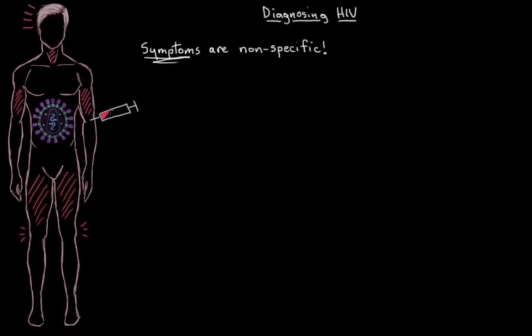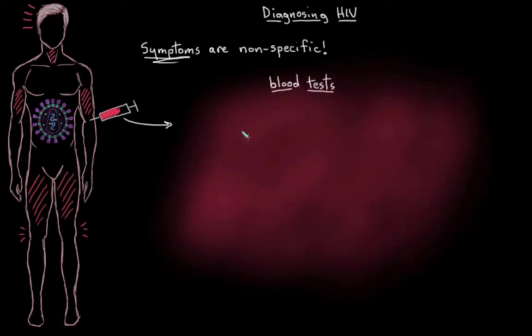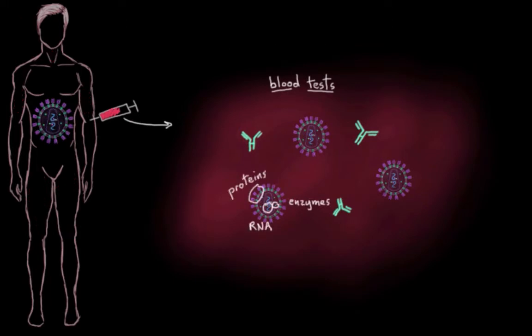Well, we do blood tests. We look for a few different compounds within the blood. We can look for antibodies that we've made against the HIV virus, or we can look for bits of the virus itself, maybe some of its enzymes, or its proteins, or some RNA.